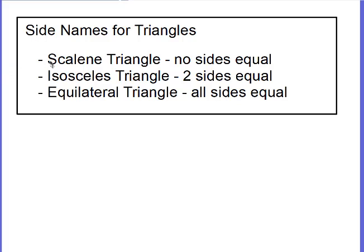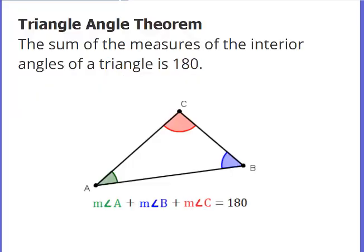The side names are: scalene triangle, where we have no sides equal; isosceles triangle, where two sides are equal; and equilateral triangle, where all sides are equal. That's fourth, fifth, and sixth grade information. Now another piece of information from fifth and sixth grade is the triangle angle theorem.